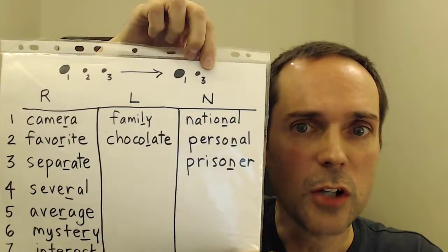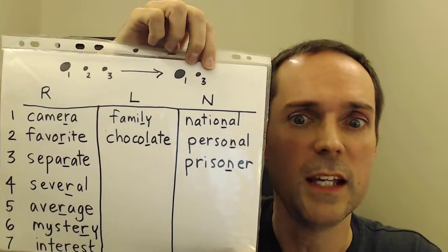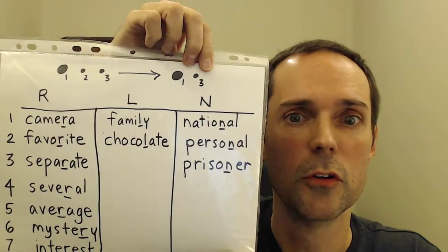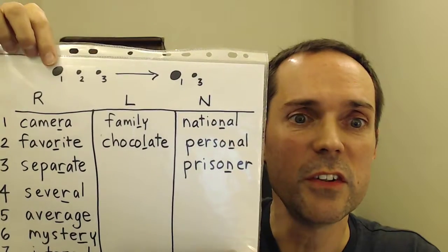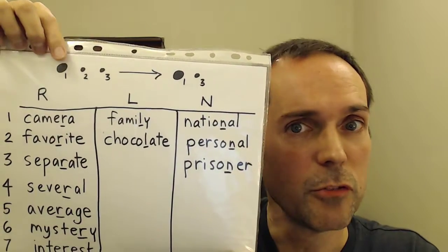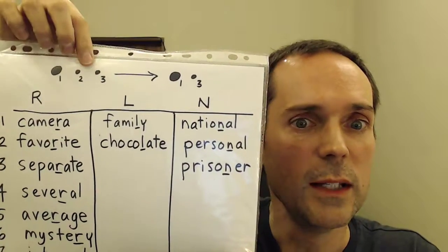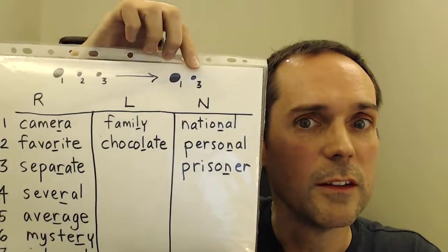In the third column, it ends in N. We say national, personal, prisoner. You can see in each of these examples that the first syllable is stressed, and we leave out the second syllable. So you don't need to use this shorter pronunciation — it's optional — but it does help your English sound more natural, and it is the pronunciation you're most likely to hear.